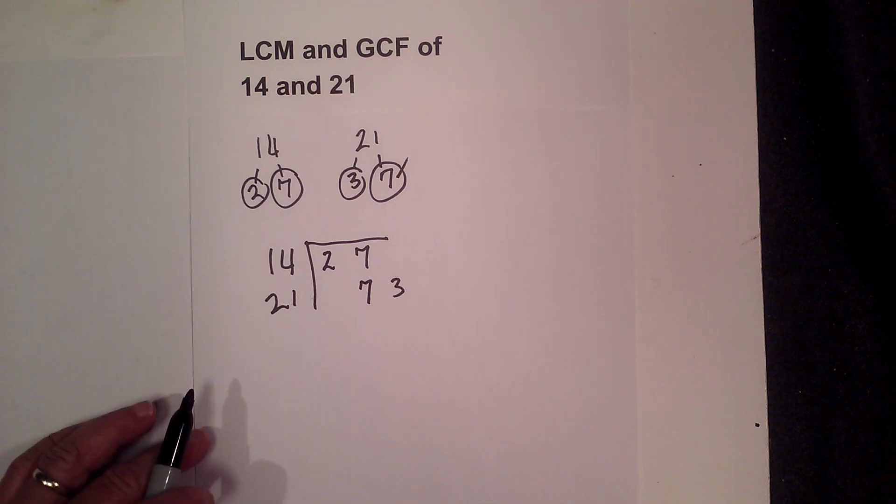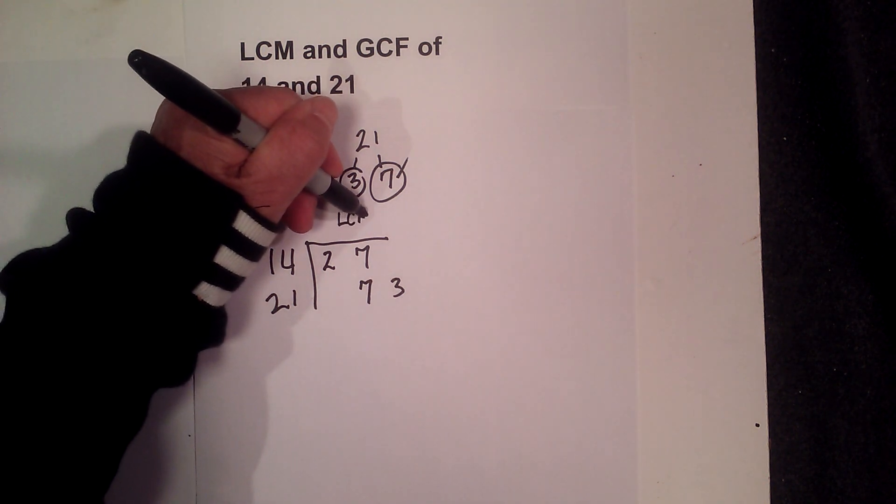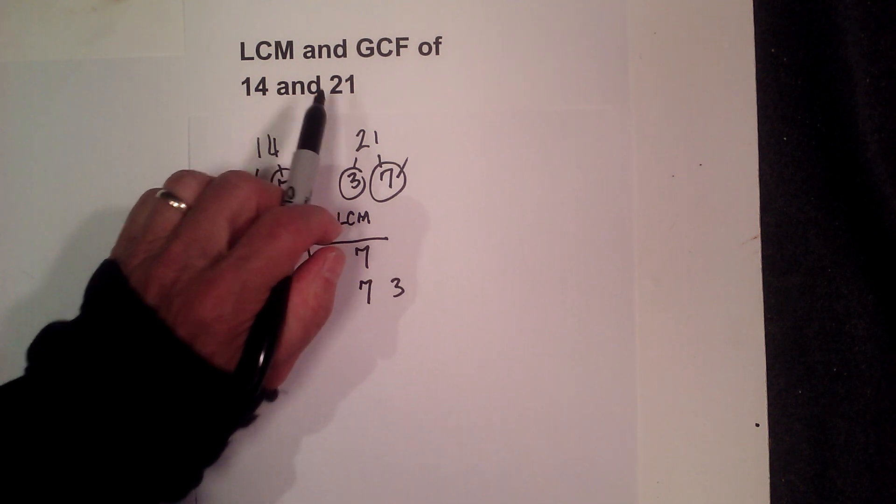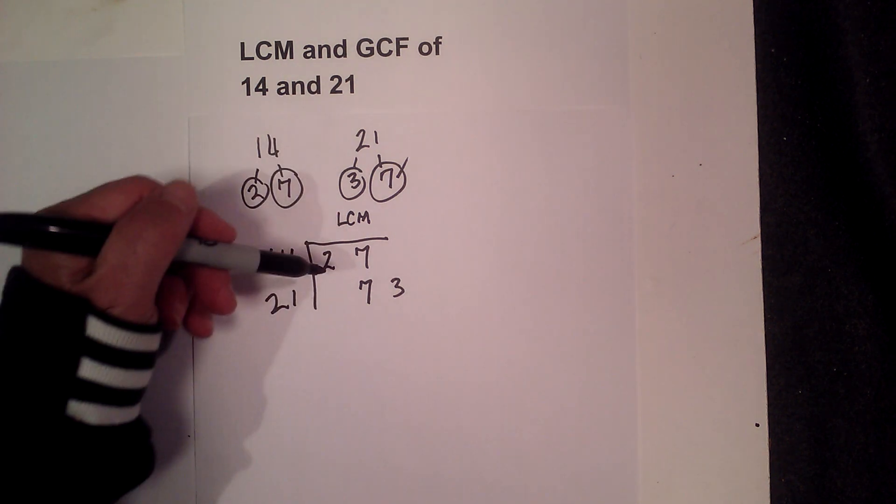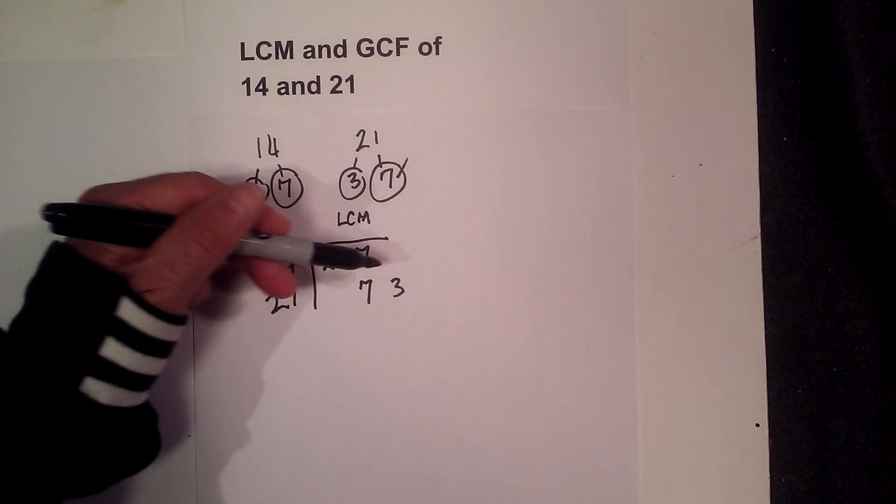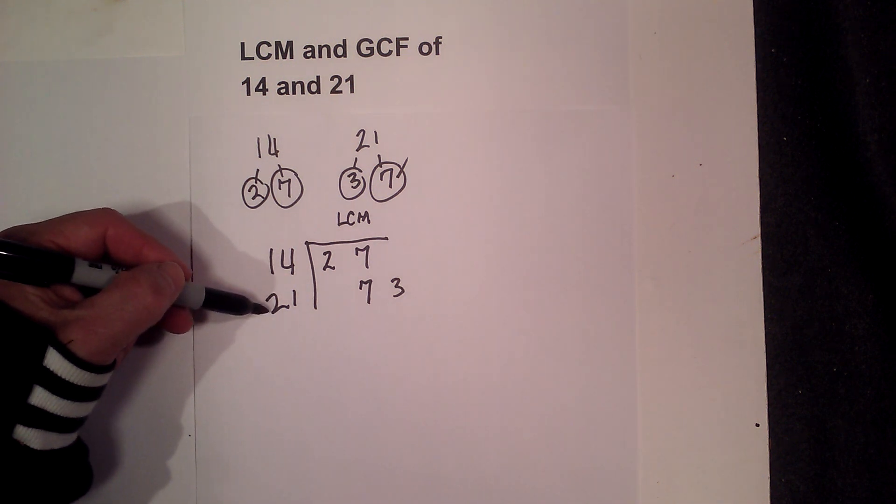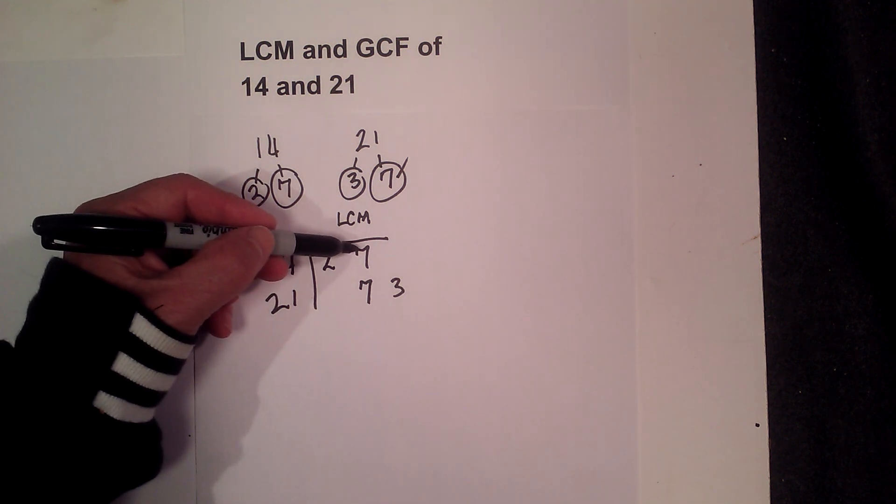Now for the least common multiple, that's what I'm finding right now. Remember, as a minimum it's got to be greater than 21. So what you do is you just multiply all the prime numbers together and use this one rule: if I have a pair of numbers that are the same, I only use one number.